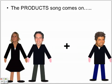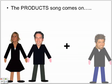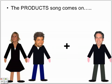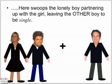Now the product song comes on — next song. Watch what happens. He swoops on over and partners up with the girl, leaving the guy who was originally dancing in the first song on his own, single. So he swoops in partnering up with the girl, leaving the other boy to be single. Remember, it would be a metal changing with another metal, or a non-metal combining with another non-metal.